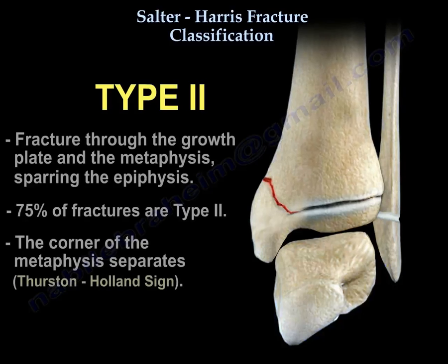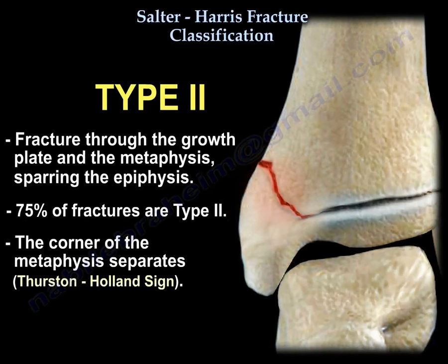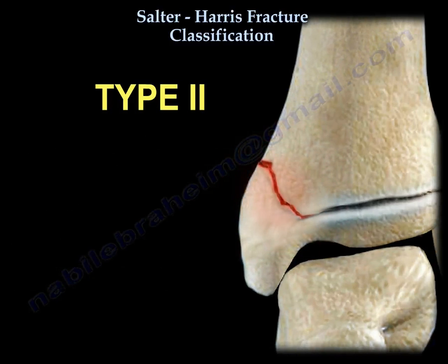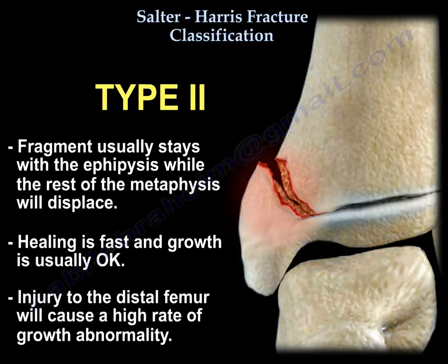Type 2 is a fracture through the growth plate and the metaphysis, sparing the epiphysis. It accounts for 75% of fractures. The corner of the metaphysis separates — the Thurston-Holland sign. This fragment usually stays with the epiphysis while the rest of the metaphysis displaces. Healing is fast and growth is usually okay, though an injury to the distal femur will cause a higher rate of growth abnormality.